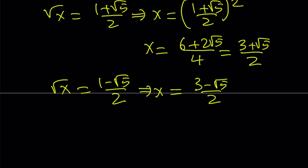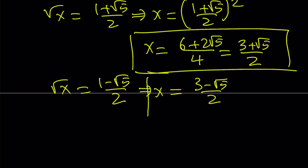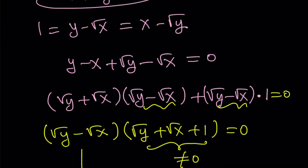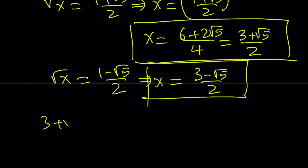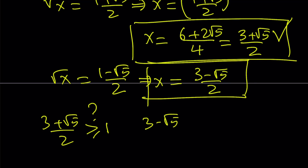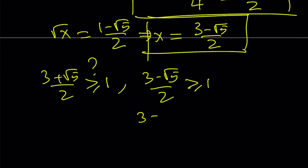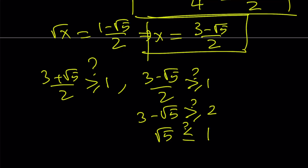Those are the two x values. But we have to remember that x needs to be greater than or equal to 1. For the first value, (3 plus root 5) over 2 is definitely greater than 1, since even 3 halves is greater than 1, so that works. For the second value, (3 minus root 5) over 2 — that would require 3 minus root 5 to be greater or equal to 2, meaning root 5 less or equal to 1, which is definitely not true. Therefore the second solution fails, and we end up with one real solution.